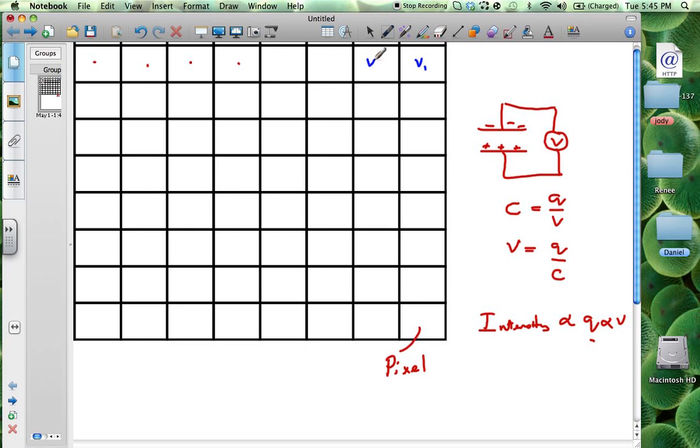Maybe voltage one, voltage two, voltage three, voltage four. With these voltages all giving an indication of the amount of light that has hit them.